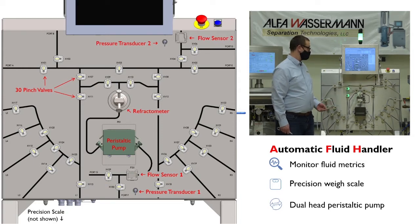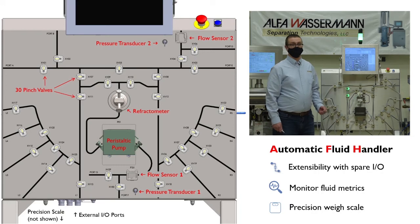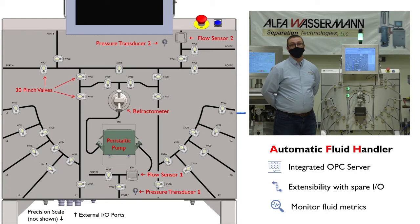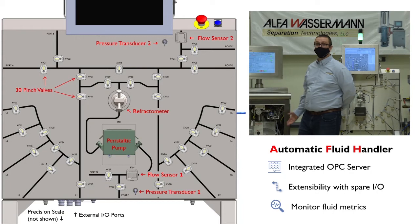The system also comes equipped with some spare I/O ports to easily add any instrumentation that a facility may require. Network integration is also readily available to utilize upstream or downstream inputs and outputs via open-platform communications, or OPC. This means that the system can also monitor and control subcomponents from other systems, such as the rotor speed from an Alfa Wassermann smart console.